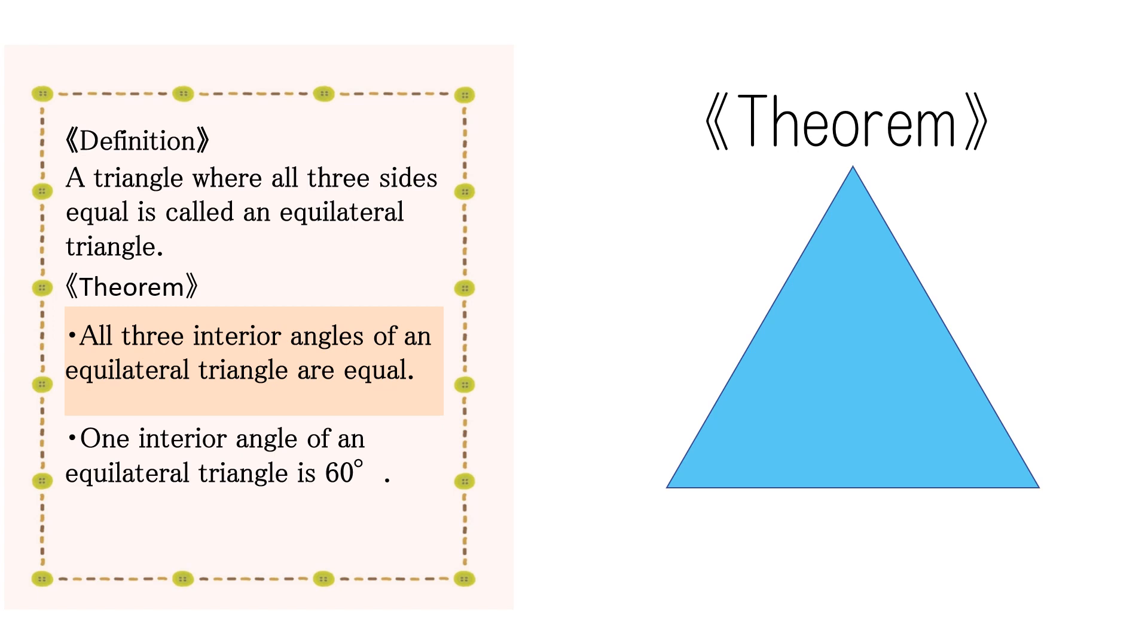This means that all interior angles are equal because the two base angles are equal in an isosceles triangle.